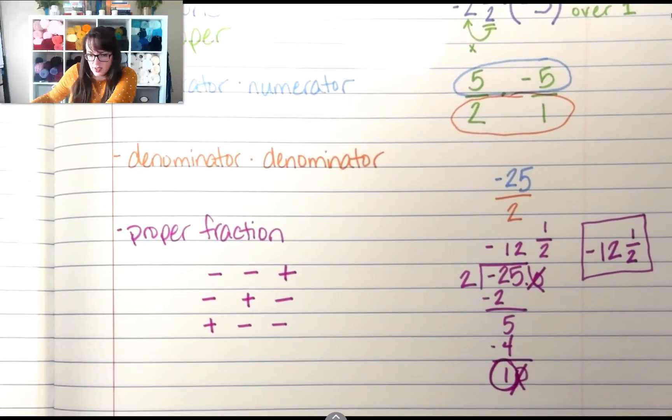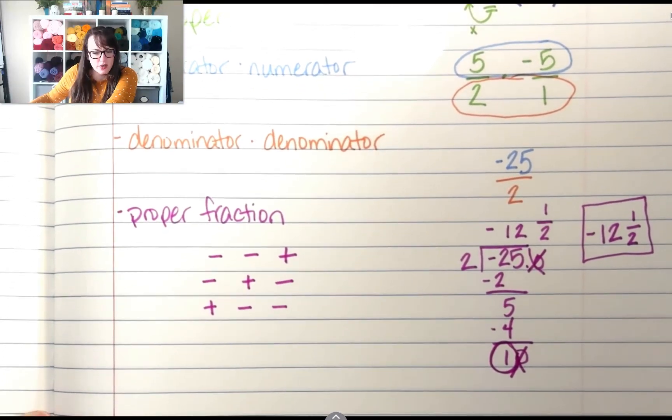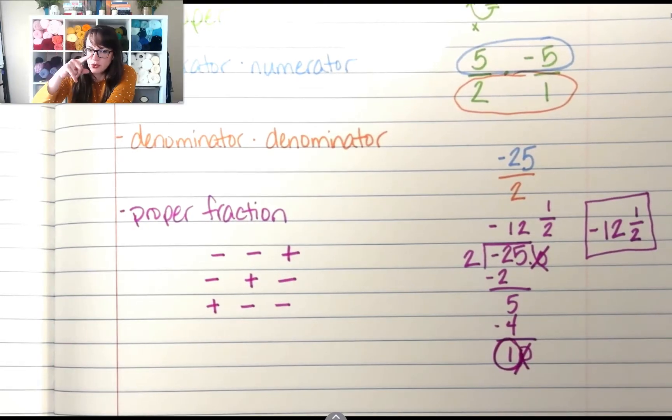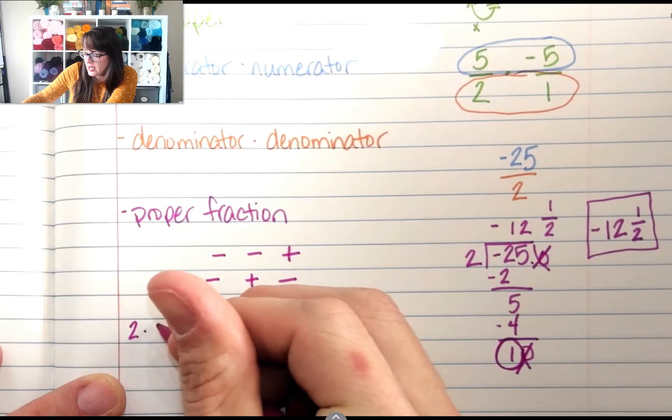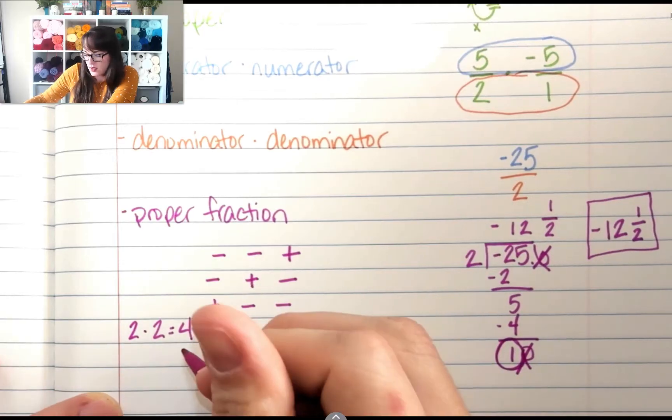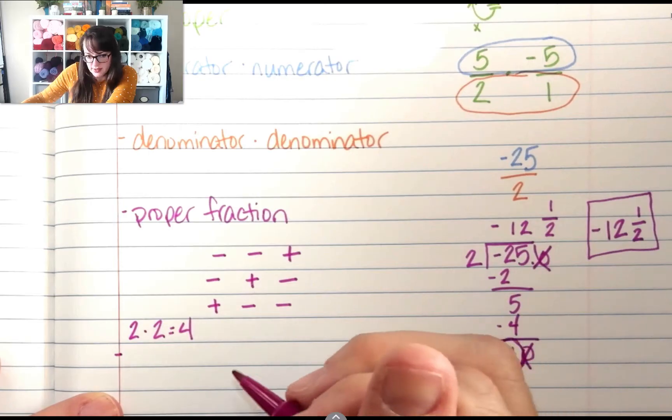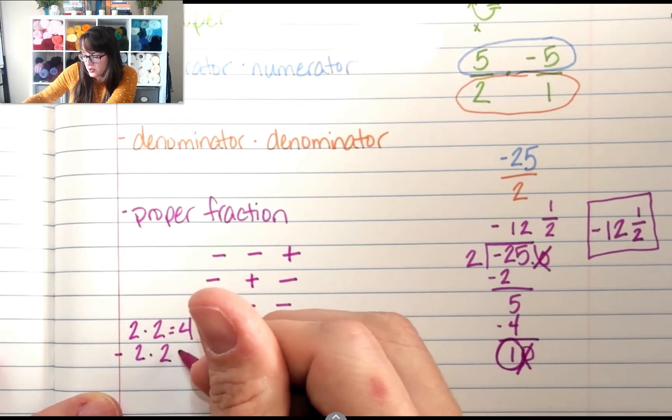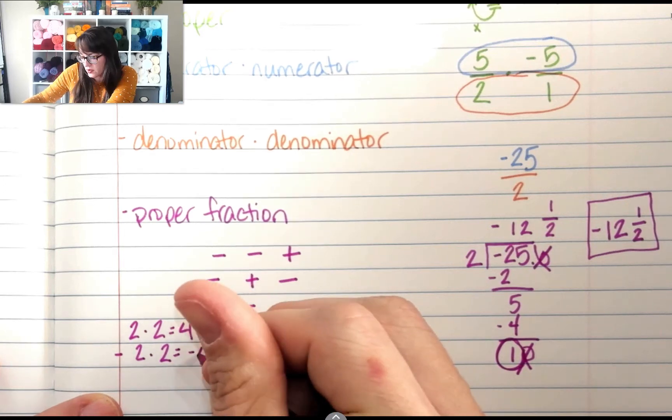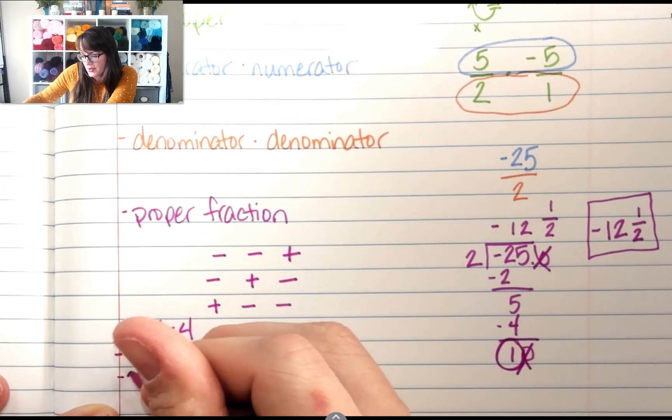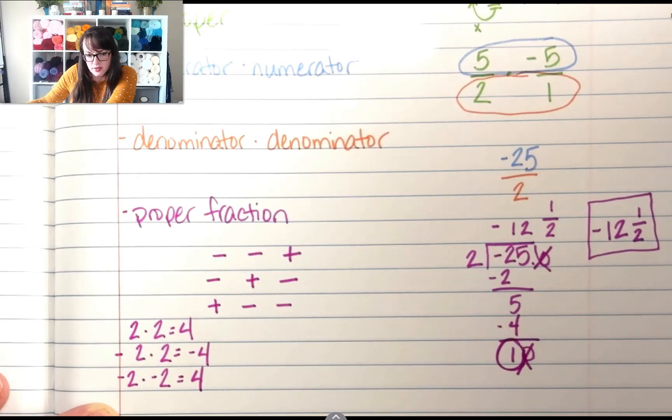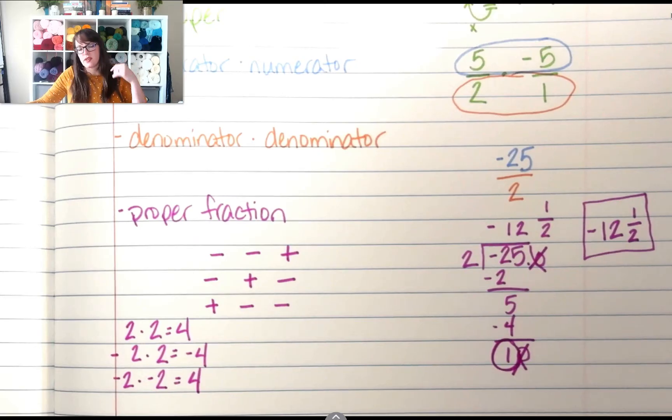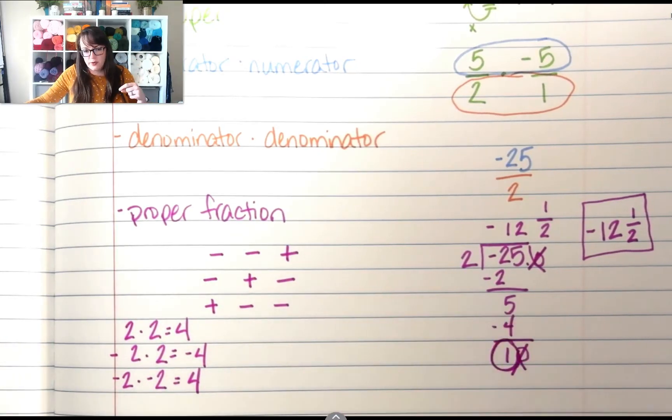Another way to help remember which sign goes with your answer. Two times two is four. So if two times two is four, then what is the opposite of two times two? That would be negative four. So then what's the opposite of the opposite of two times two? It's positive four. So when you think of the negative sign as the opposite, that'll help you remember when to change your signs.